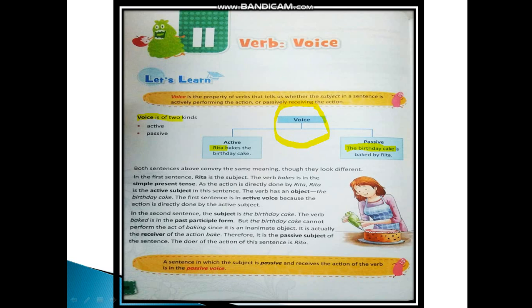Both sentences convey the same meaning though they look different. 'Rita bakes the birthday cake' and 'The birthday cake is baked by Rita' — the meaning remains the same. In the first sentence, Rita is the subject, the verb 'bakes' is in the simple present tense, and Rita is the active subject performing the action directly. The verb has an object: the birthday cake.